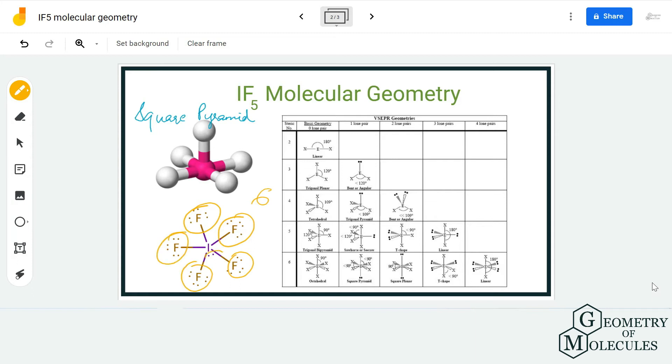There is one lone pair in this molecule which corresponds to square pyramid molecular geometry. Hence, the molecular geometry for IF5 molecule is square pyramid.